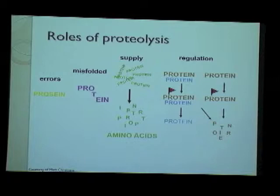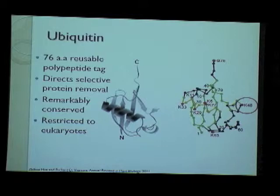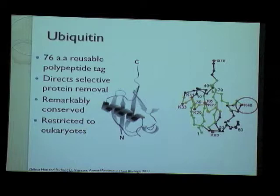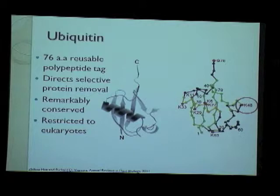In regulation, the cell usually tags the protein with a molecule such as ubiquitin and marks it for degradation. Ubiquitin is a 76 amino acid long, reusable polypeptide tag used by cells to direct selective protein removal, among other things. It is remarkably conserved throughout evolution and is restricted to eukaryotes and archaea. When a protein is ubiquitinated with a single ubiquitin molecule, its function is modified; but when a polyubiquitin chain is formed, the protein is usually marked for degradation.